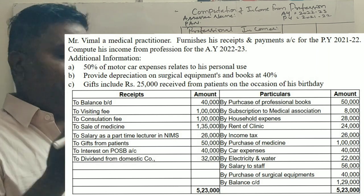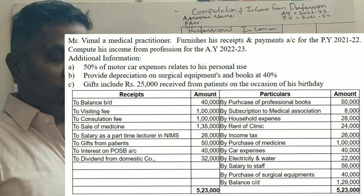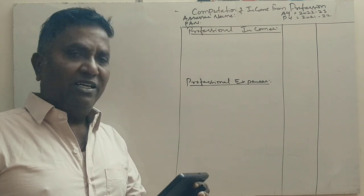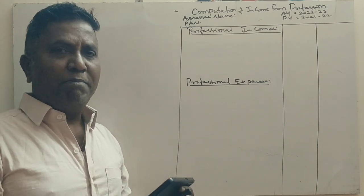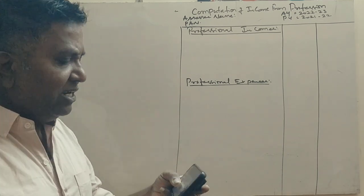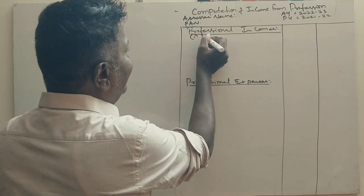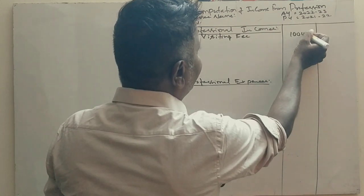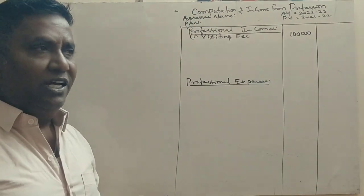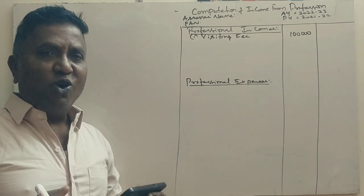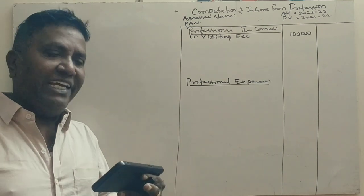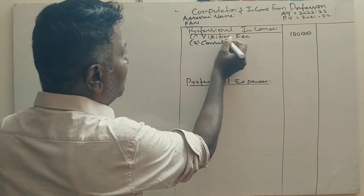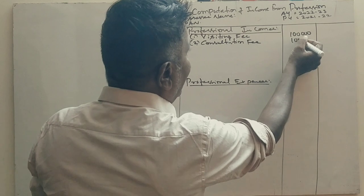First income item: visiting fee. When a doctor visits a patient, that is professional income. So visiting fee is one lakh rupees. Next, consultation fee is also professional income — one lakh rupees.